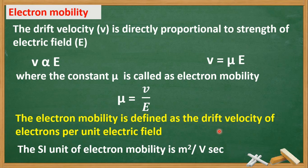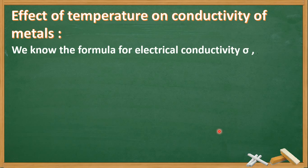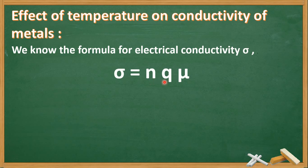This was an important part needed to understand the effect of temperature on conductivity of metals. To understand how temperature rise affects the conductivity of metals, you must know the term electron mobility. Now let us learn the effect of temperature on conductivity of metals. We know the formula for electrical conductivity sigma: sigma is equal to N, Q, mu.